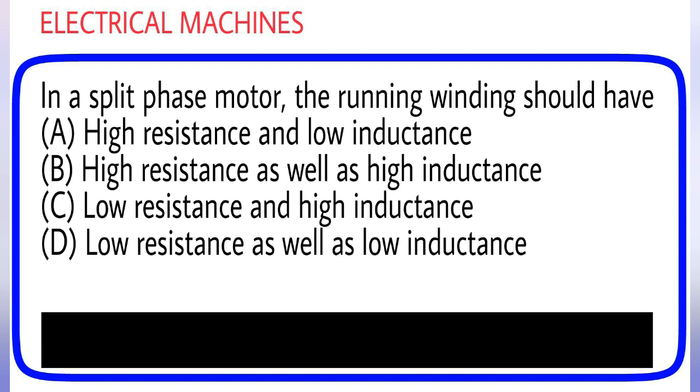In a split phase motor, the running winding should have: (A) High resistance and low inductance, (B) High resistance as well as high inductance, (C) Low resistance and high inductance, (D) Low resistance as well as low inductance. Answer is option C.